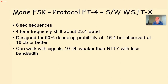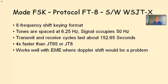FT4: four six-second sequences, four-tone frequency shift, only 23.4 baud so we can put a lot of signals over the bandwidth. It's designed for 50% probability — you can receive things at minus 16 dB. A lot of people get through at minus 18, minus 20. It can work with signals 10 dB weaker than radio teletype. FT8 is the one people are most using: eight-frequency shift tones at 6.25 hertz, signal occupies 50 hertz. Transmit and receive signals are very quick — four times faster — and it works well with moon bounce where Doppler shift would be a problem.